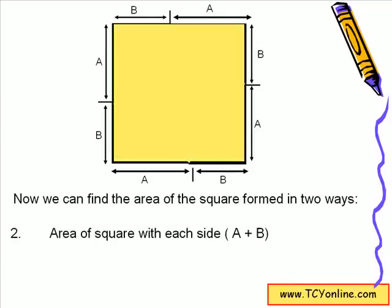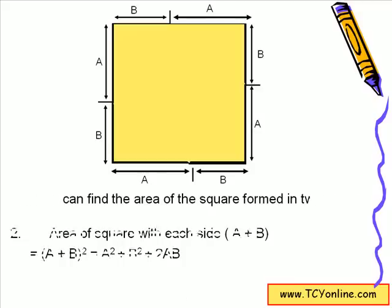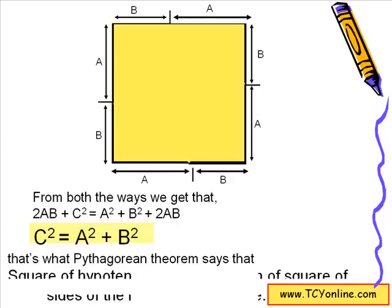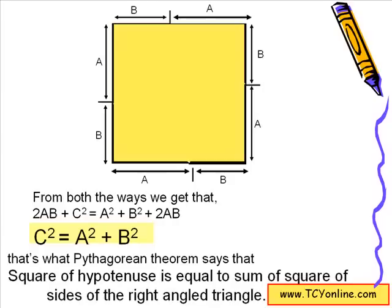The second way is to find the area of the outer square with each side (A + B), which equals A² + B² + 2AB. Setting both expressions equal: 2AB + C² = A² + B² + 2AB. Simplifying, we get C² = A² + B², which is exactly what we want for the Pythagorean theorem — the square of the hypotenuse equals the sum of the squares of the other two sides.